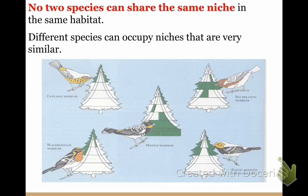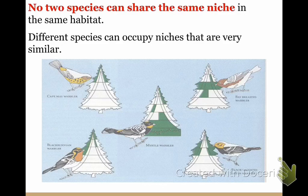The range of temperatures that an organism needs to survive and its place in the food web are part of its niche. The combination of biotic and abiotic factors in an ecosystem often determines the number of different niches in that ecosystem. No two species can share the same niche in the same habitat. Different species can occupy niches that are very similar, but if two things are living in the same niche, they're going to fight over it, and one of them is going to be chased out or killed.